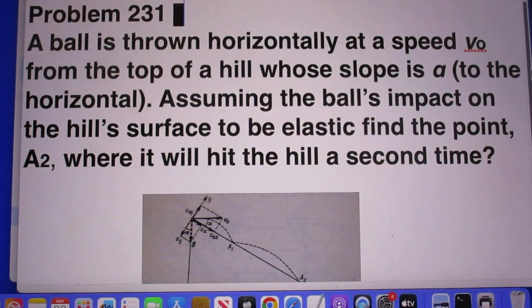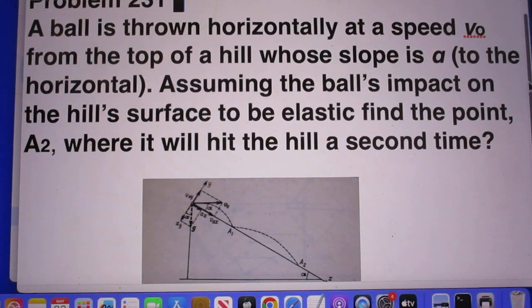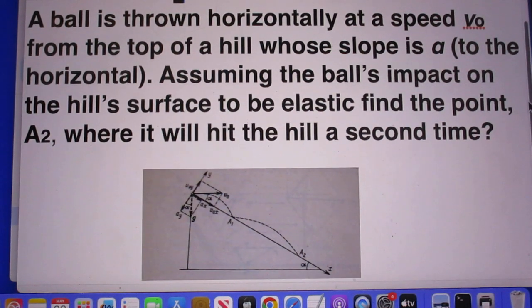A ball is thrown horizontally at a speed V0 from the top of a hill whose slope is alpha to the horizontal. And you see the picture here.